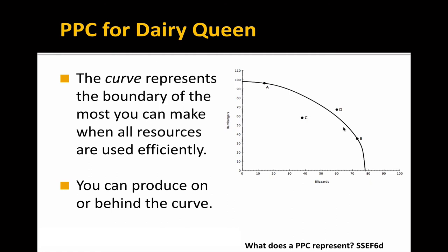Sometimes I may try to trick you and say, what if you tried really hard — could you produce out here at point D? And the answer is no. Point D is beyond what you can produce. So this is the boundary, the production possibilities curve — sometimes called a frontier in other textbooks. You can produce anywhere along this line, but not beyond it.